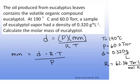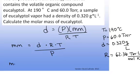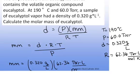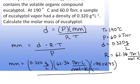Now I'll plug in the values. The molar mass equals 0.320 grams per liter times 62.36 torr liters per mole kelvin times the temperature in kelvin (190 + 273) divided by the pressure of 60 torr.